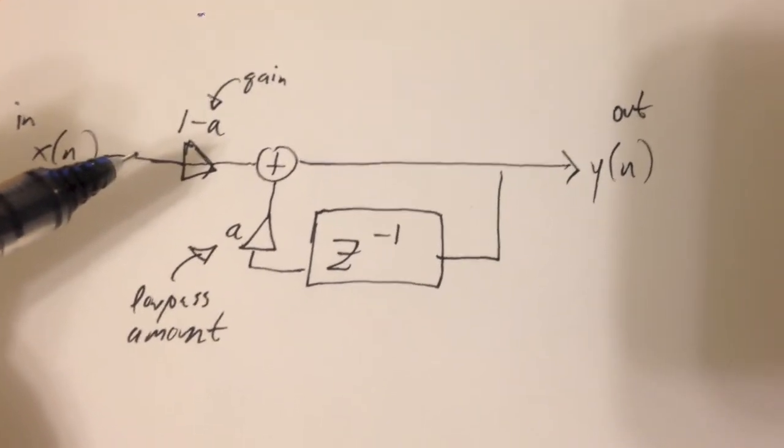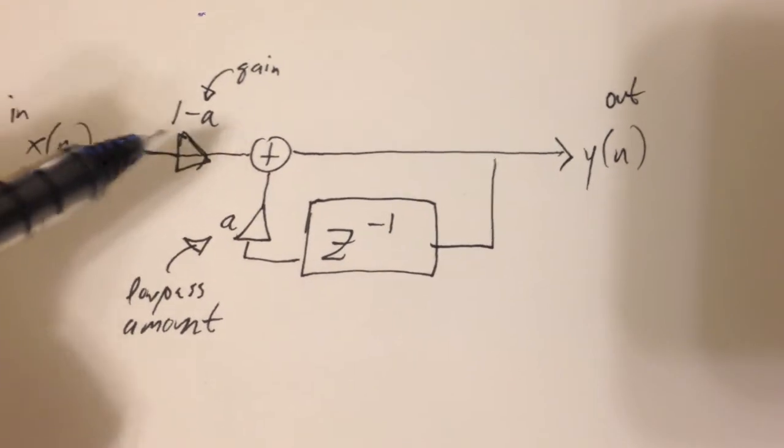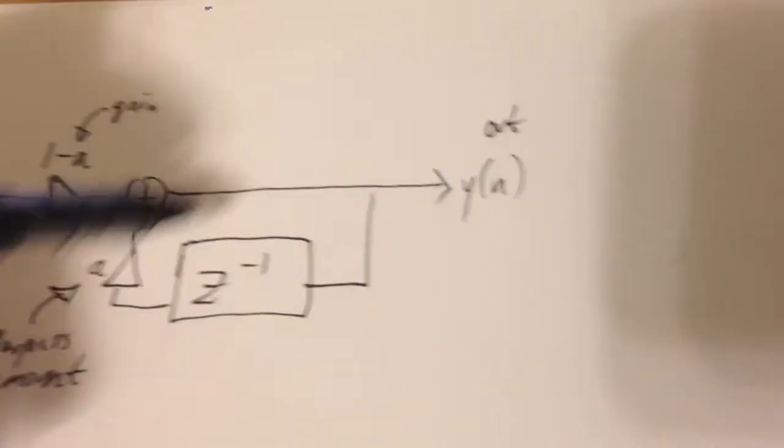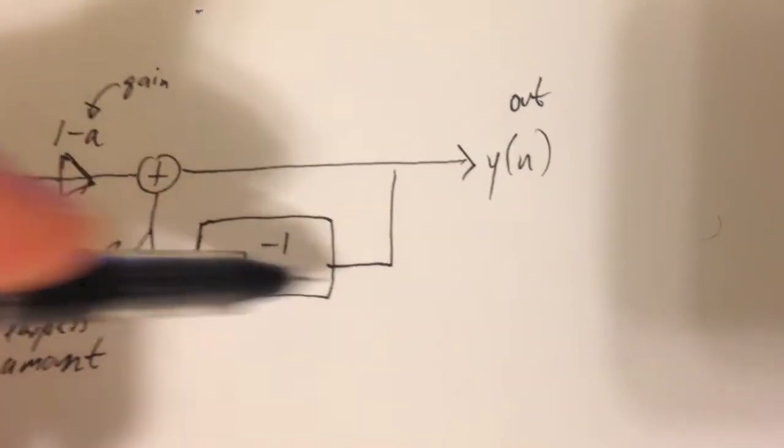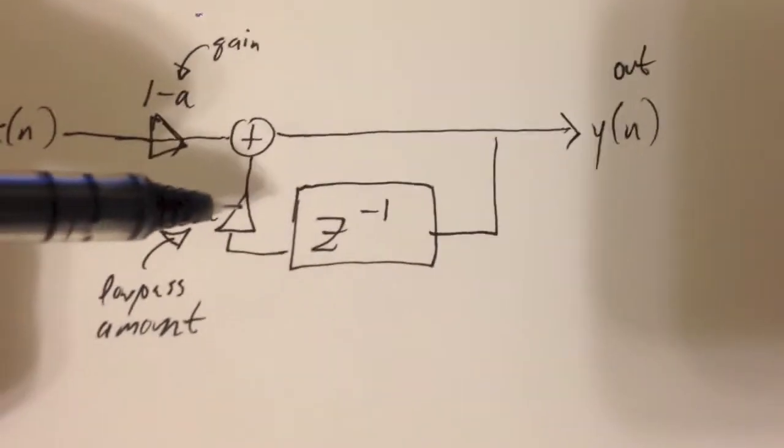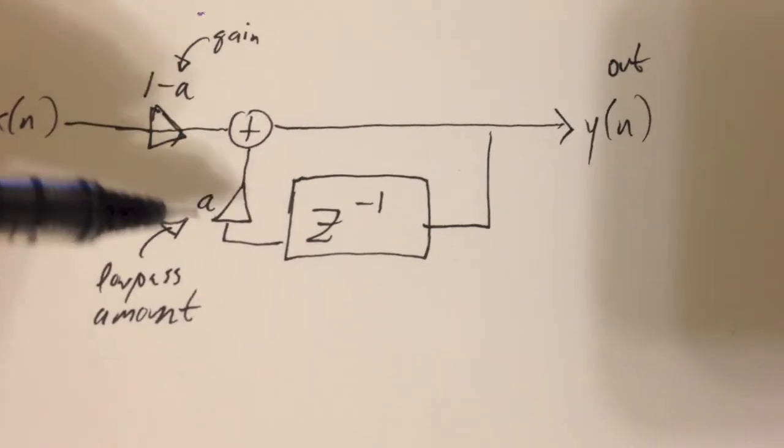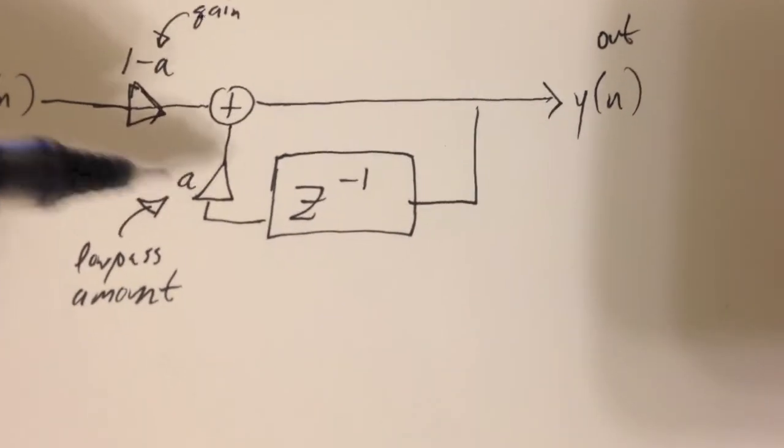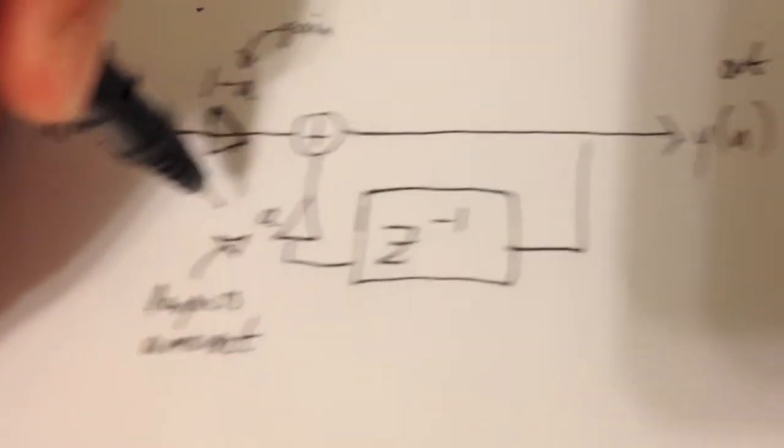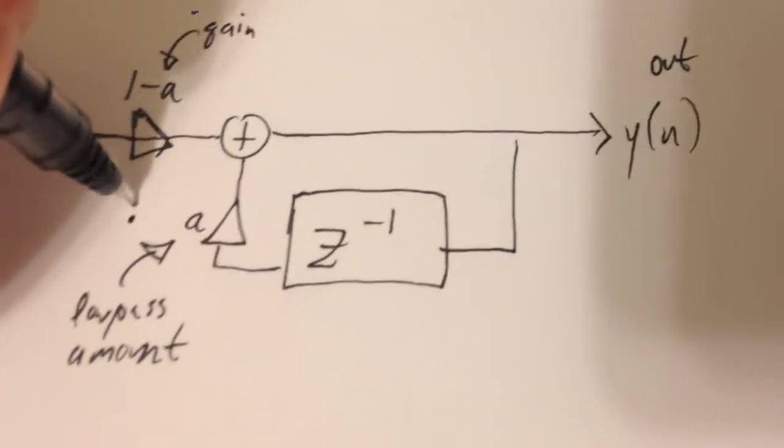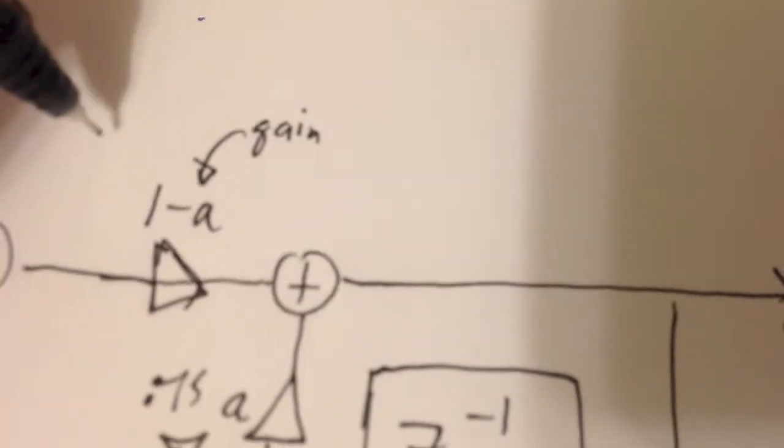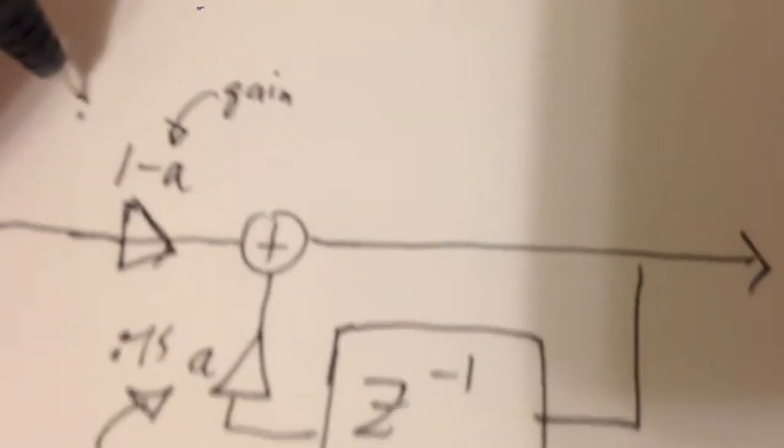Okay, so this is a diagram of a one-pole low-pass filter. You can see that the signal goes in here, goes down this way. This is a one-sample delay. You'll multiply it by some amount that determines the low-pass from zero to one. So let's say this might be, let's say this is 0.75. Then one minus a might be 0.25 because they have to add to one.